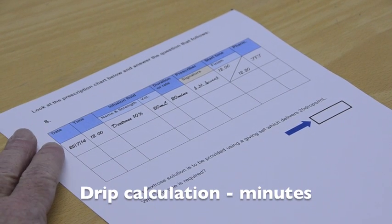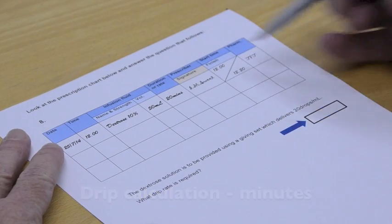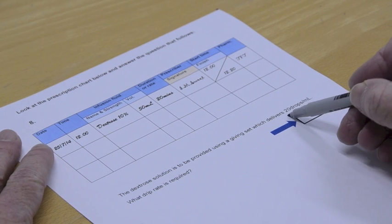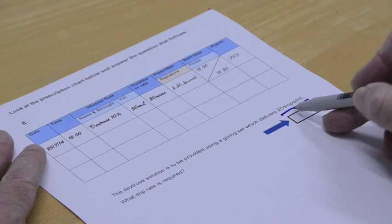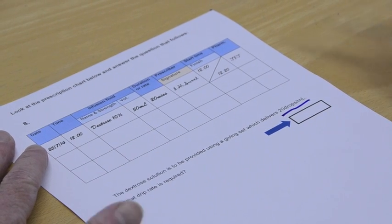Alright, drips again. Why do I say that? Because it says drops per mill. We've got a giving set which is 20 drops a mill, so we know it's a drip setup.